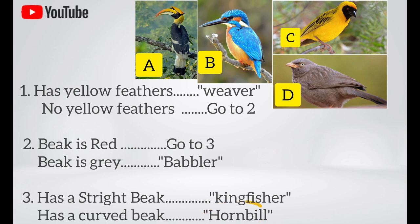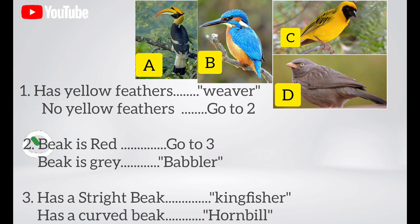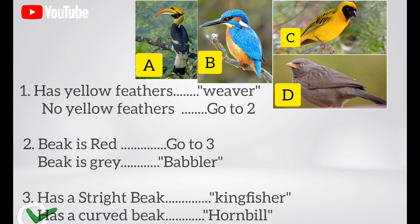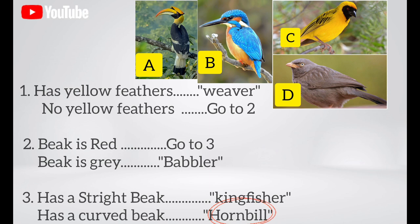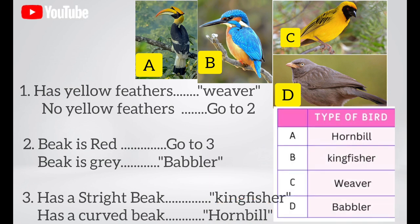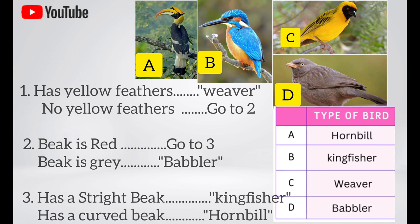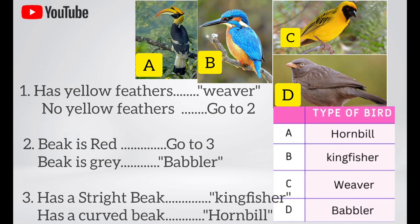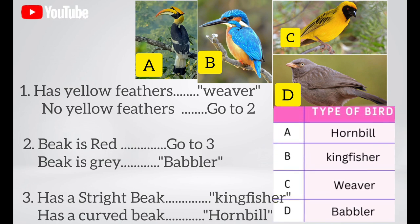So the answer using the key is that bird A is a hornbill bird — it was not having yellow feathers so we jumped to statement two, the beak was red in color so we jumped to statement three, and it has a curved beak, so it is a hornbill bird. Likewise, bird B is a kingfisher bird, bird C is a weaver bird, and bird E is a babbler bird.